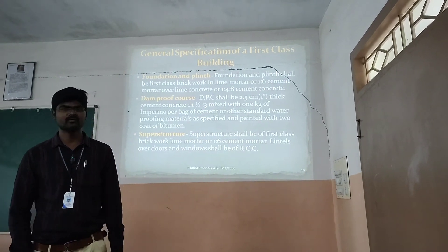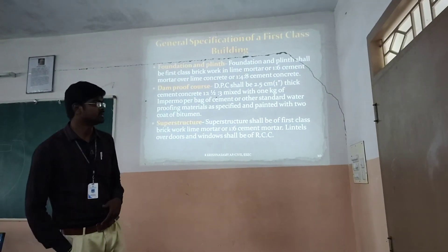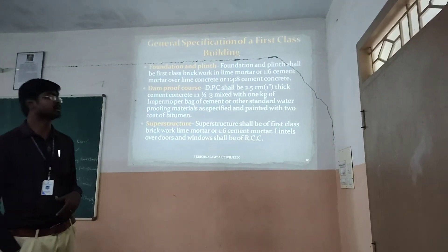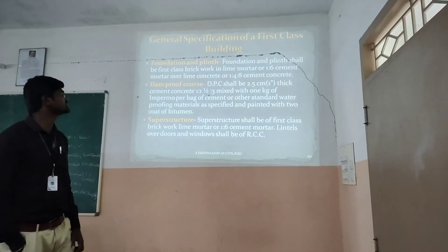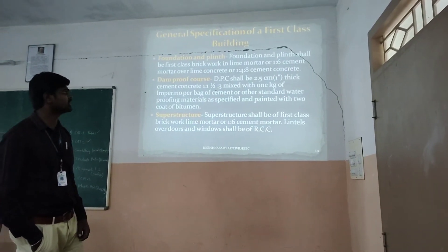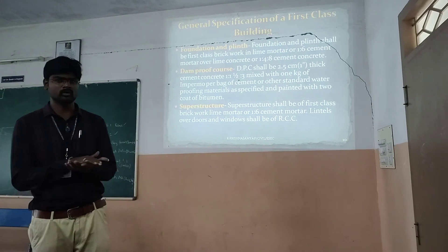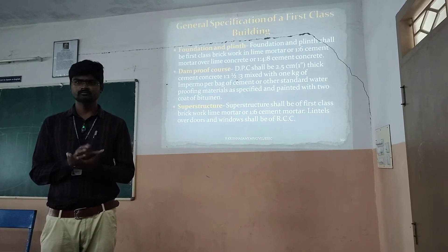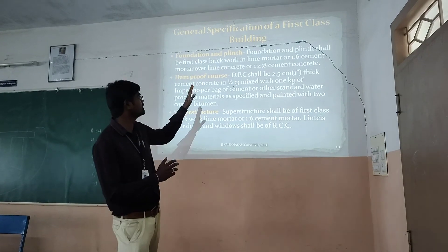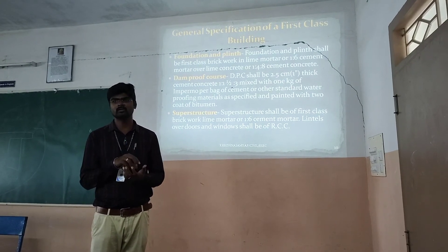General specification of a first-class building: First, we go for foundation and plinth. The foundation and plinth shall be first-class brickwork in lime mortar, with 1:6 cement mortar over lime concrete, or 1:4:8 cement concrete. The materials include first-class brickwork, cement mortar, and lime concrete in the specified mix proportions.